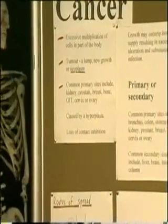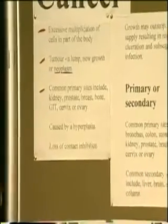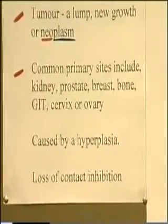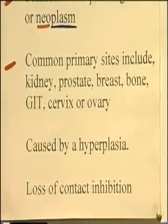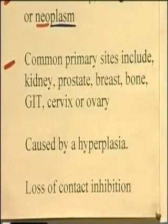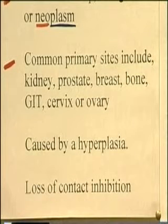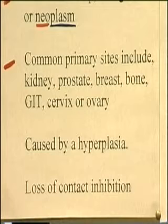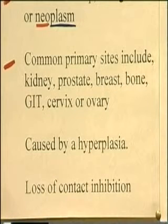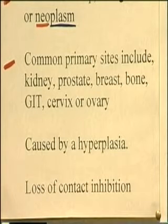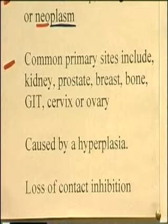Some tissues give rise to cancers more commonly than others. You can get primary tumours of the kidney, but certainly the prostate gland, breast, gastrointestinal tract, cervix, and ovary are among the most common. As I say, many tissues can be primary sites for tumours.